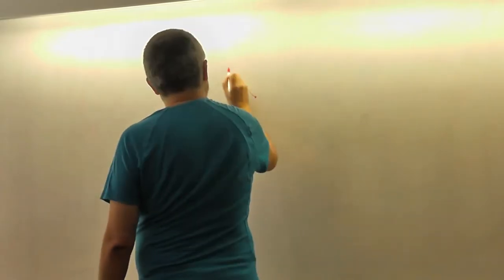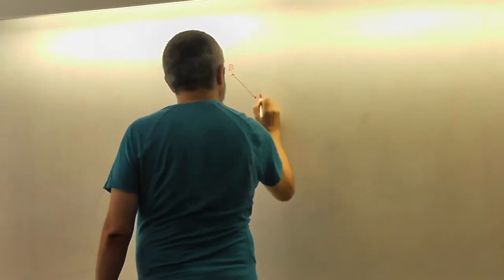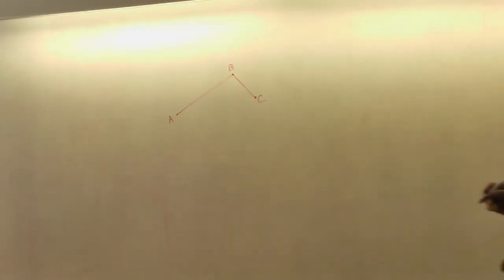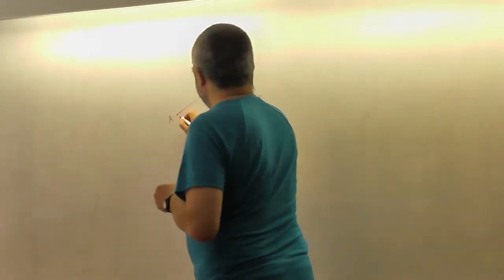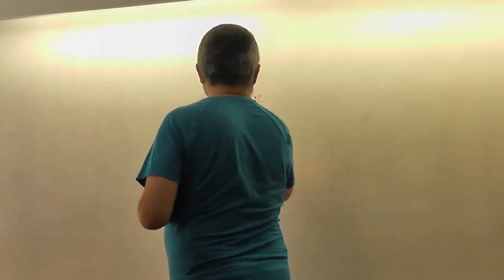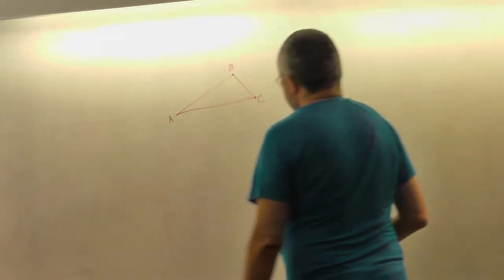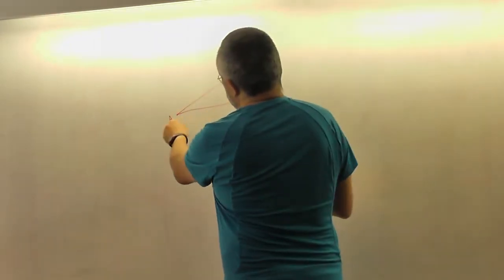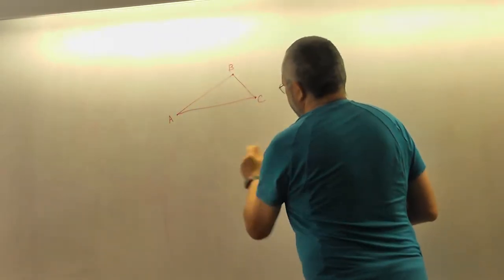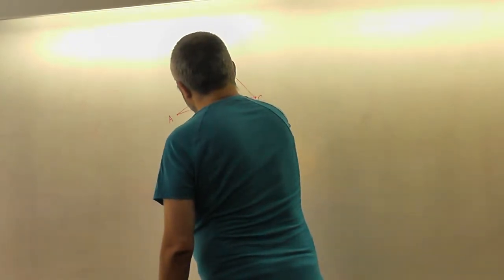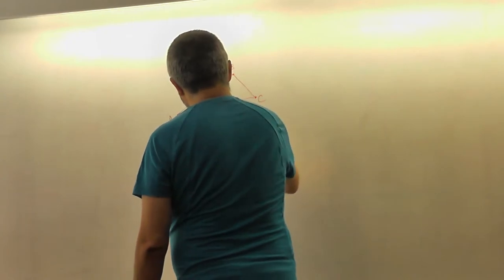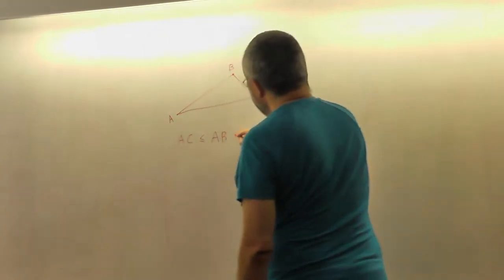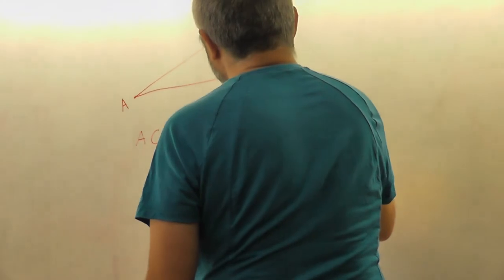So if we have three points, then there is an observation saying that the direct path AC is smaller than AB plus BC.